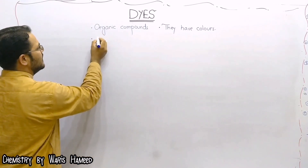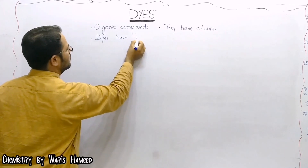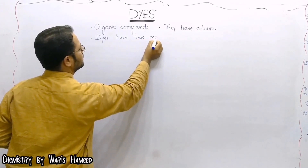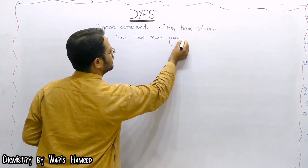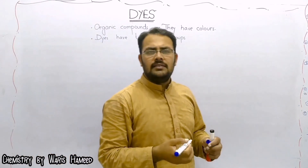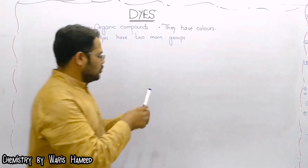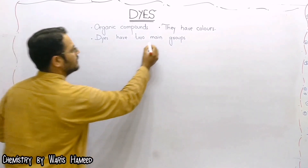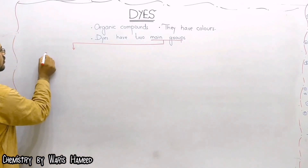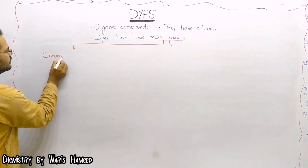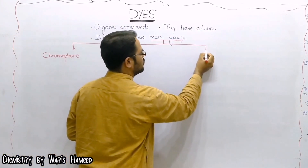Dyes have two main groups which give some properties to a dye, like color and the ability to attach to any fabric. Those main groups are: first is chromophore, and the second group is the auxochrome of the chromophore.